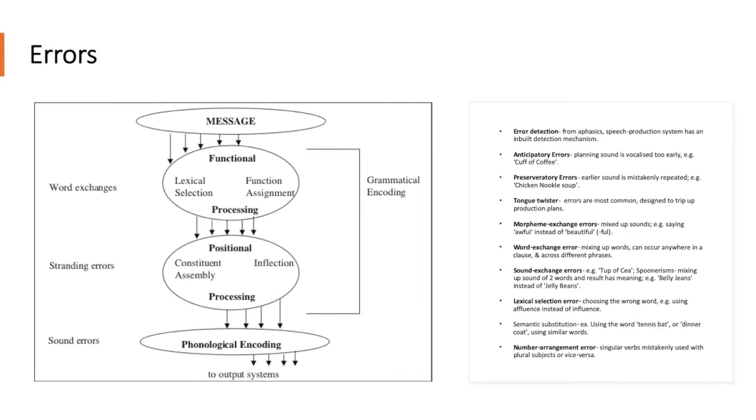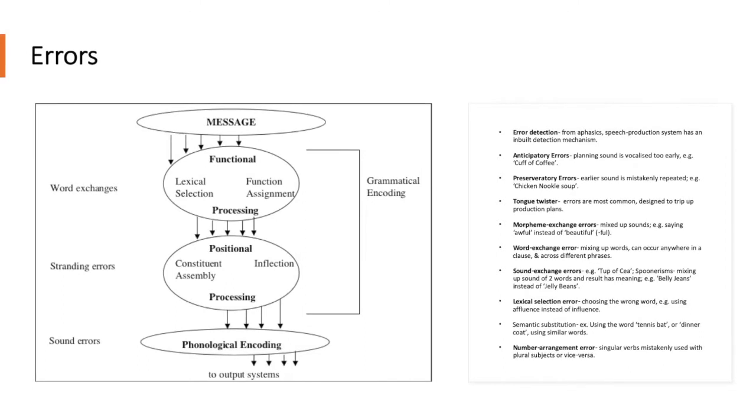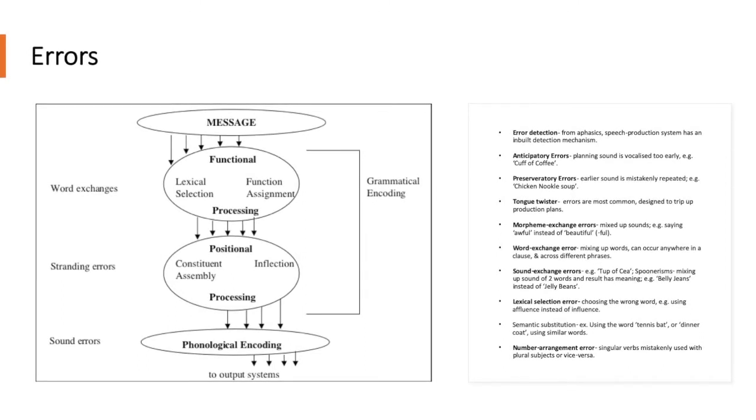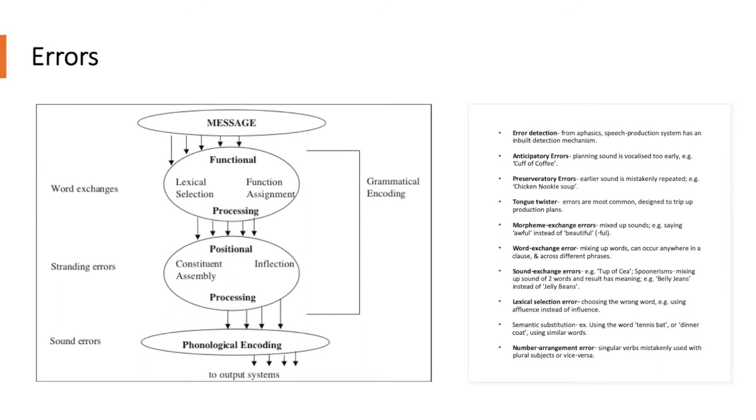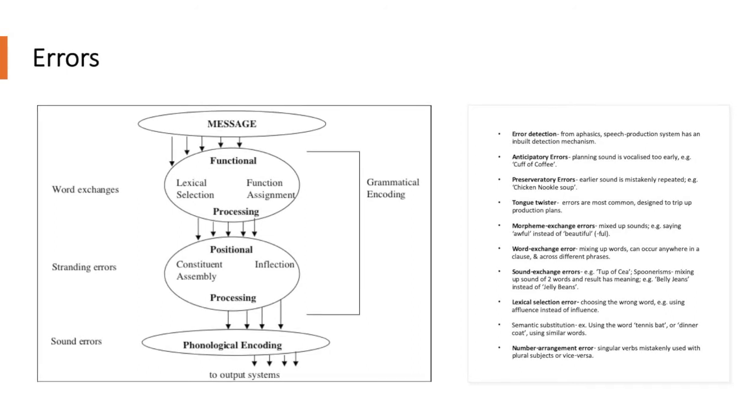Lexical selection error. This is the choosing of the wrong word. So for example, using affluence instead of influence or using effect instead of affect. Semantic substitution. An example of this is using the word tennis bat or dinner coat. Thus, similar words are used. Number arrangement error. This is where singular verbs are mistakenly used with plural subjects or vice versa.